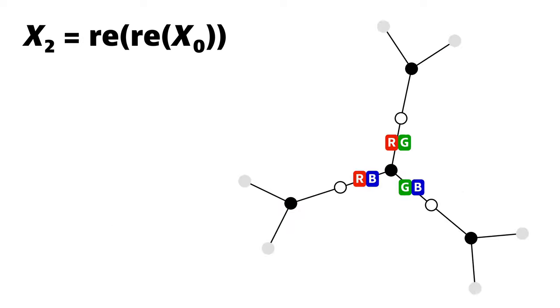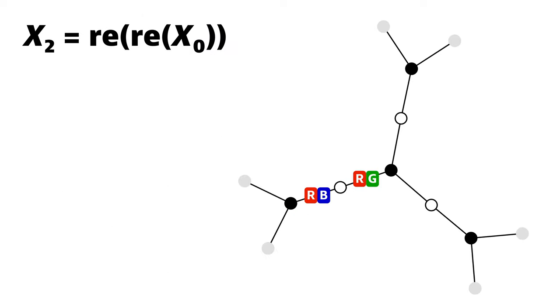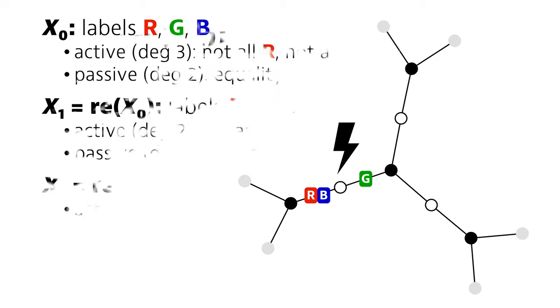So for example, this is fine. And so is this. But this isn't. Here we've got green in all sets. Passive nodes have the following constraint. The sets must have a non-empty intersection. So for example, this is fine, and this. But this isn't. There are no common elements.